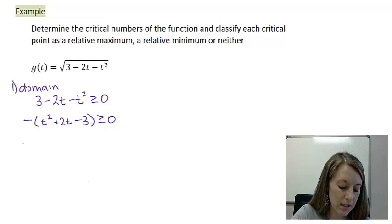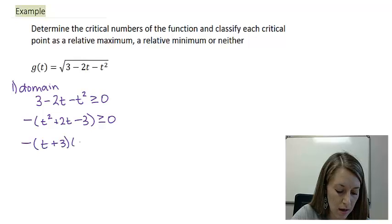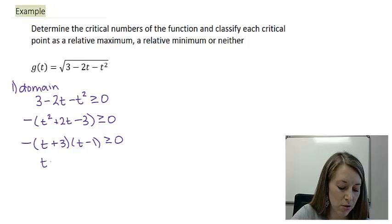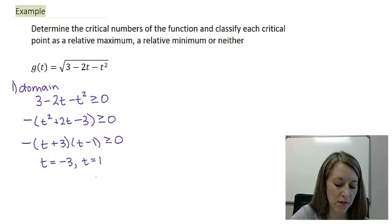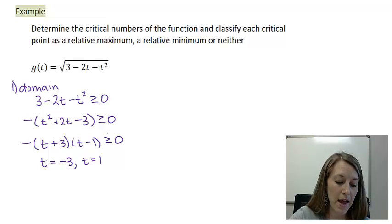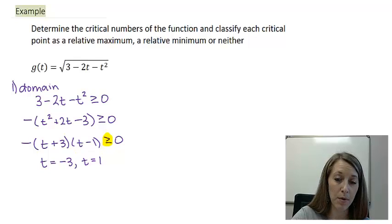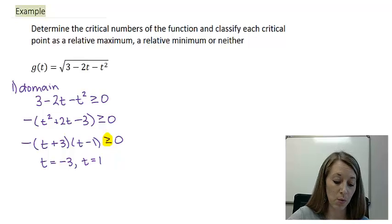Factoring t² + 2t − 3 gives (t + 3)(t − 1). Setting each factor equal to zero gives t = −3 and t = 1 as the boundary points. Now we need to figure out how those factor in with the greater-than-or-equal-to-zero condition, so we do a quick sign chart to determine where the expression is positive.